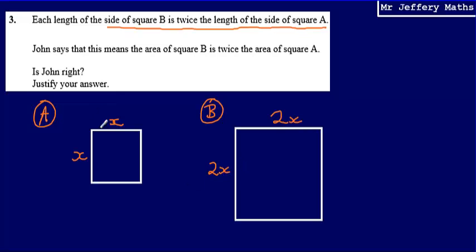Now if I work out what the area for square A is, I could say that the area would be X multiplied by X, which would give me X squared. The area for square B is going to be 2X multiplied by 2X, so that's going to give me 4X squared.